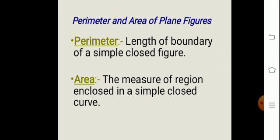The length of a boundary of a simple closed figure is called perimeter, and we find it by taking the sum of all sides. Area is the measure of a region enclosed in a simple closed curve. How much space an object occupies — through that we will find the area.